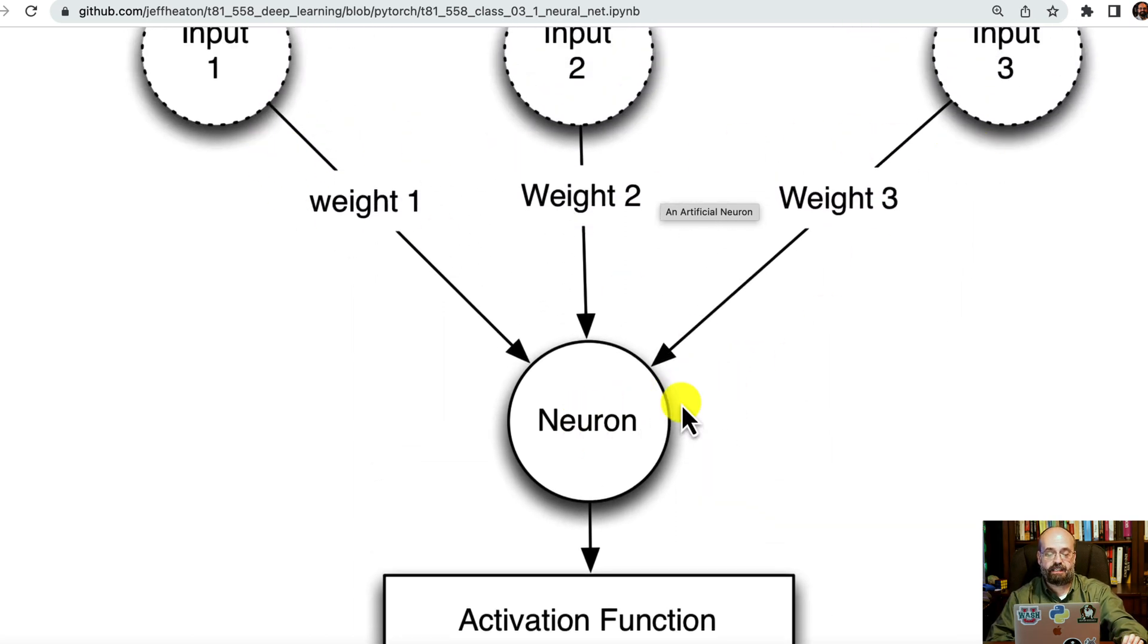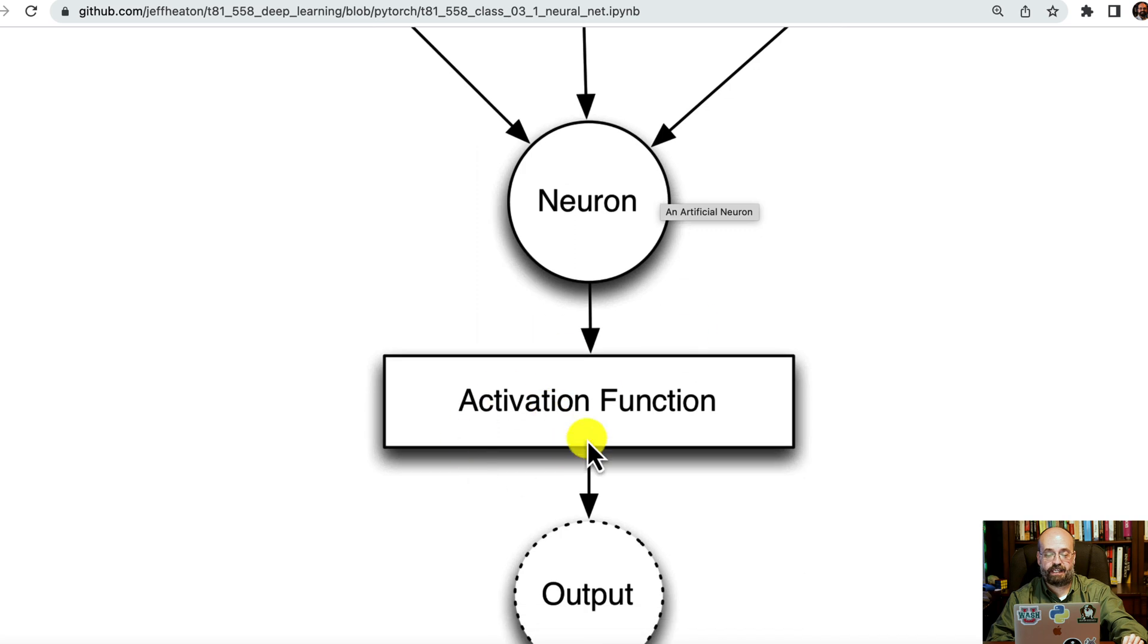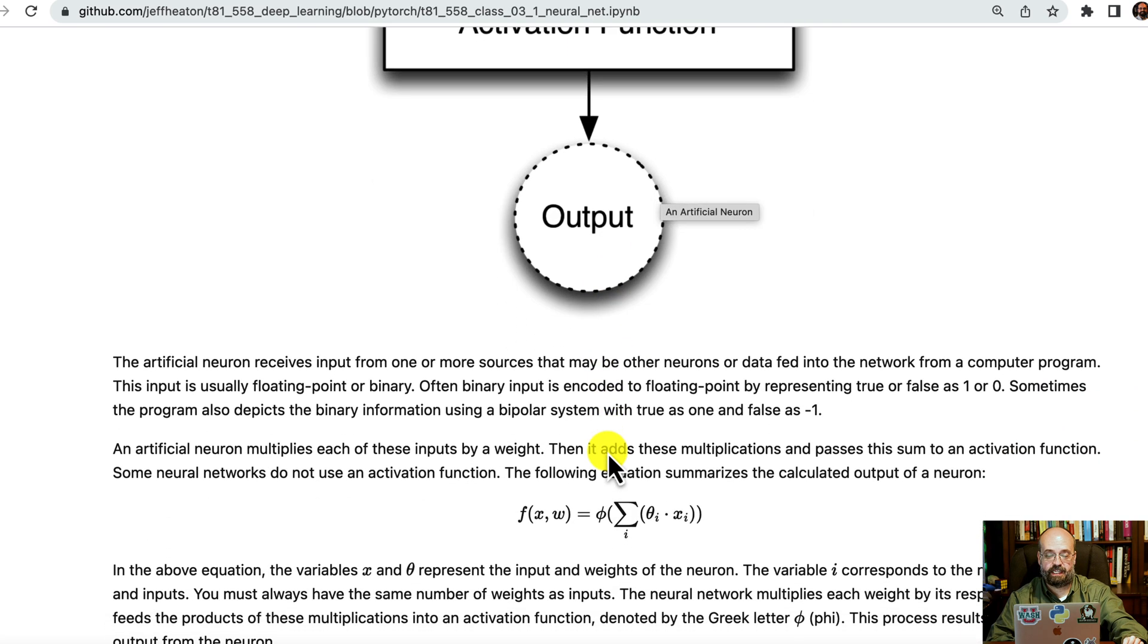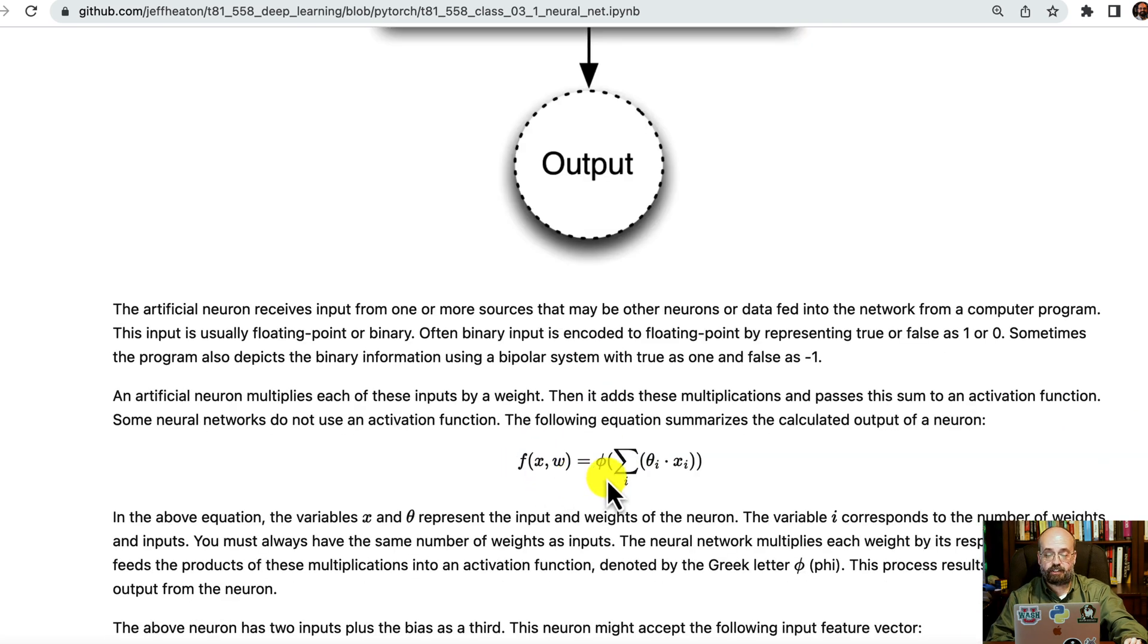Weighted input going into a summation, going then into an activation function, and then to the output. The function looks something like this. You have the inputs being the X. That is the input vector tensor, basically, that is going into the neural network. The weights for this particular layer. And then the output of that. Let's start in the center.